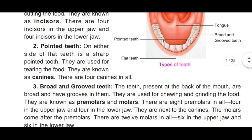The second type is pointed teeth. On either side of the flat teeth is a sharp pointed tooth. They are used for tearing the food and are known as canines. There are four canines in all. Flat teeth ke dono taraf ek nukila dant hota hai jise pointed teeth ya canines kehte hain. Canines ki sankhya chaar hoti hai — upar ke jaw mein do aur neeche ke jaw mein do.